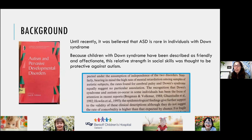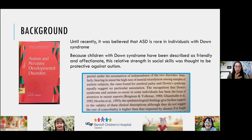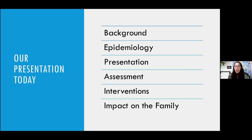As a background, until very recently, it was believed that autism was uncommon in people with Down syndrome and that there was no particular association between Down syndrome and autism. This is a textbook from the 90s that still states they see no particular association between rates of autism in individuals with Down syndrome as well as other conditions. In my presentation today, I hope to educate you on the fact that that is incorrect.